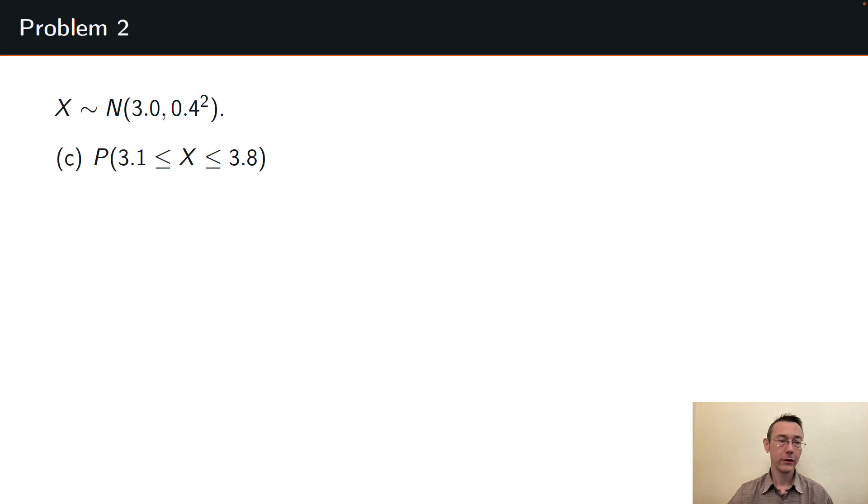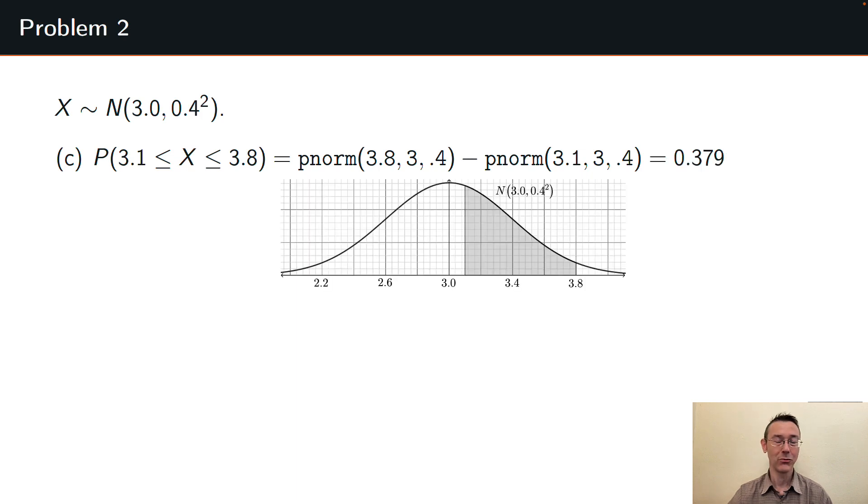Let's do a couple more that are slightly different. The probability that X is between 3.1 and 3.8 in this same normal distribution. So I want to do this by taking the area to the left of 3.8 and then subtracting out the area to the left of 3.1 again in the same normal distribution with mean 3 and standard deviation 0.4.